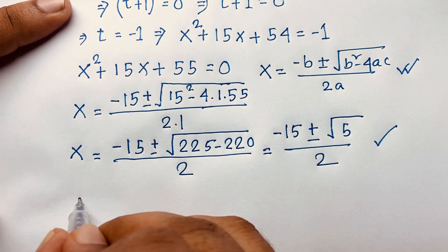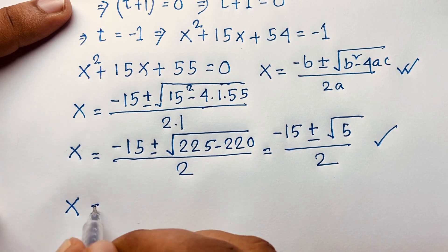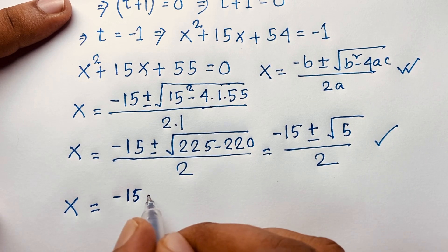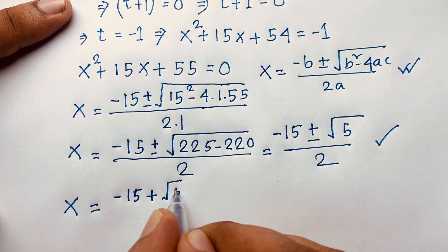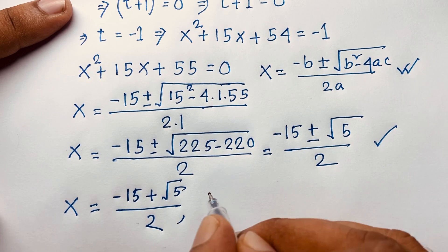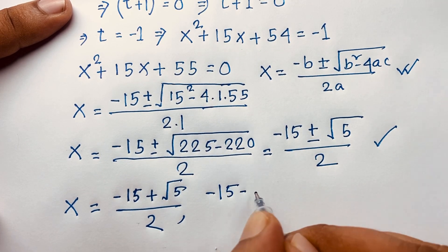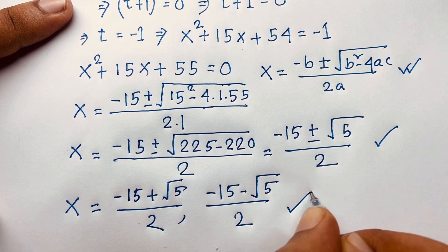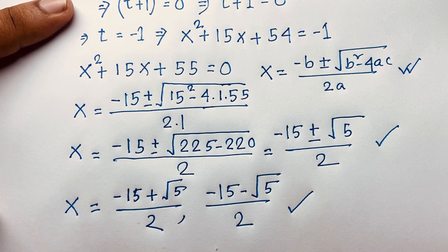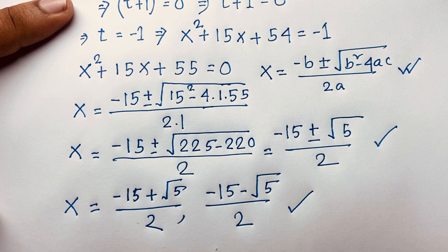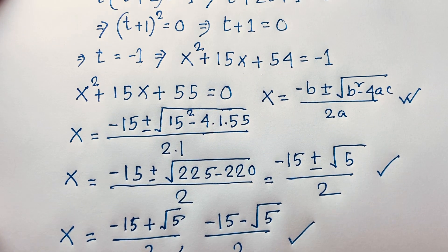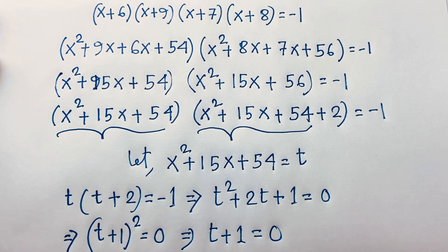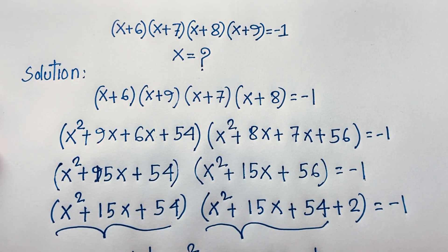The two solutions are x = (-15 + √5) / 2 and x = (-15 - √5) / 2. These are the values of x for this math olympiad question. Thank you all — if you enjoyed this video, please subscribe to my channel for other interesting videos. Goodbye, take care!